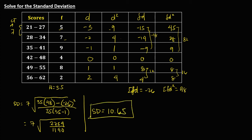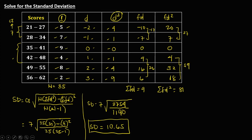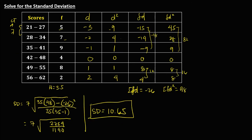Therefore, we get the same answer regardless of which middle class we choose. Whether we put 0 at the third or fourth class, the standard deviation is 10.65.